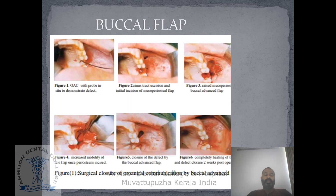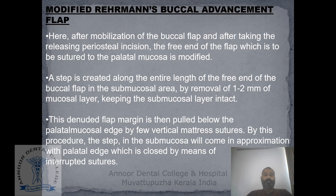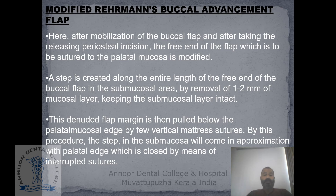This diagram shows the buccal advancement flap. A modified buccal advancement flap can also be done. After mobilization of the buccal flap and taking the releasing periosteal incision, the free end of the flap which is to be sutured to the palatal mucosa is modified. A step is created along the entire length of the free margin of the buccal flap in the submucosal area by removal of one to two millimeters of mucosal layer.